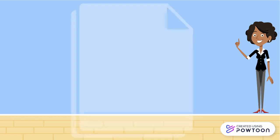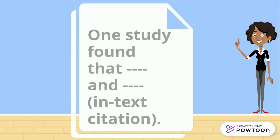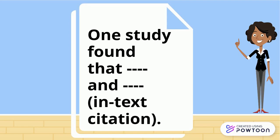When you're quoting, place your in-text citation at the end of the direct quote. When you're paraphrasing or using ideas from a source, place the in-text citation as close as possible to this information.